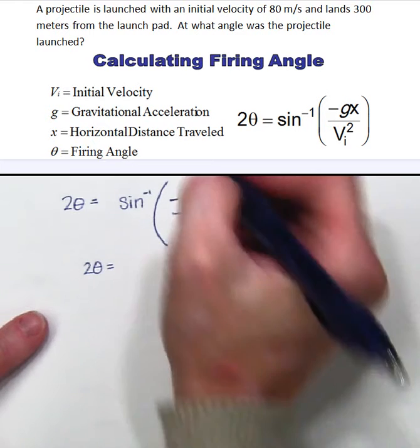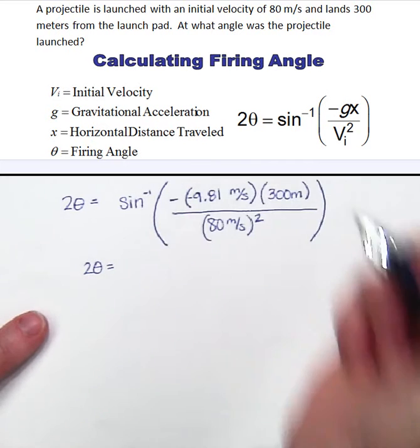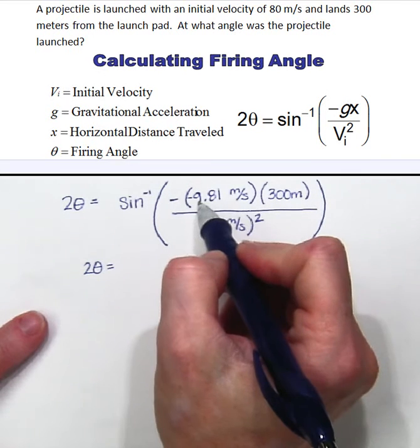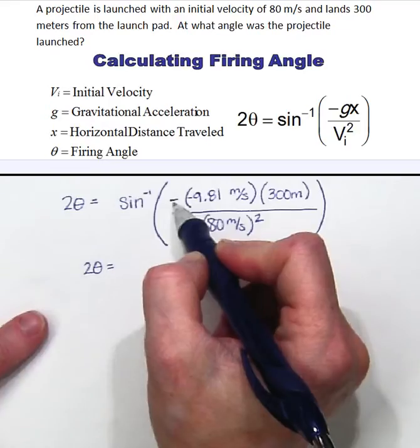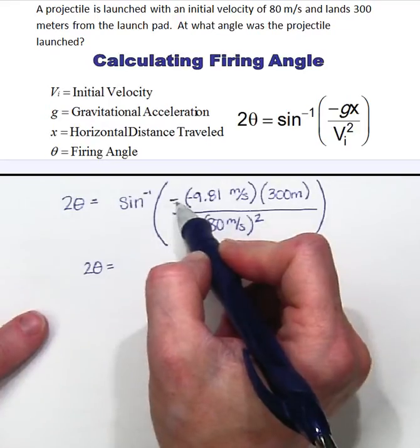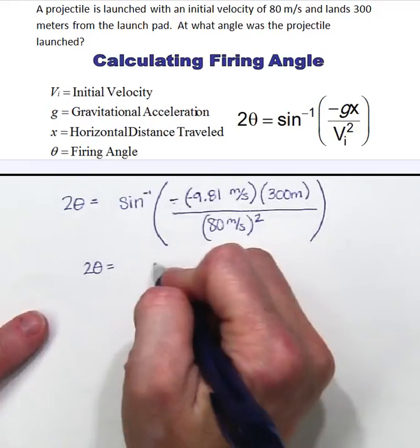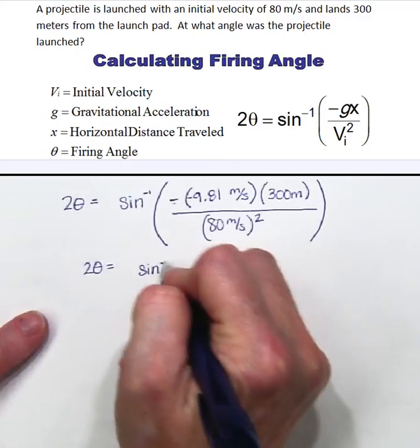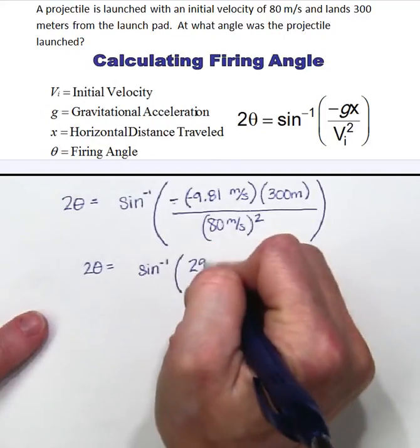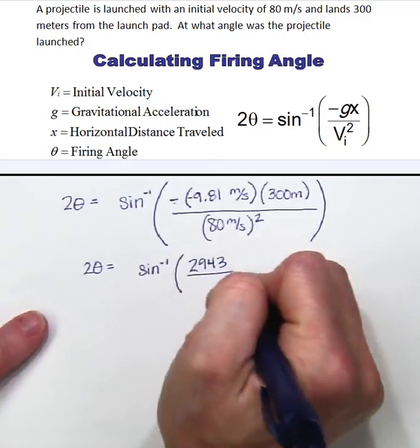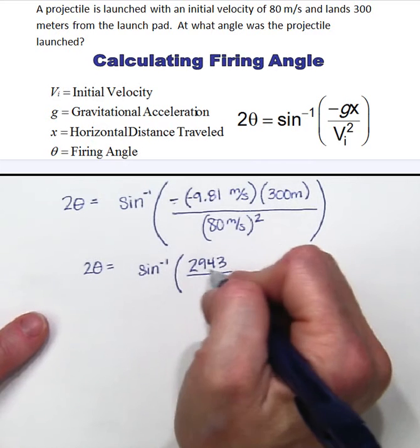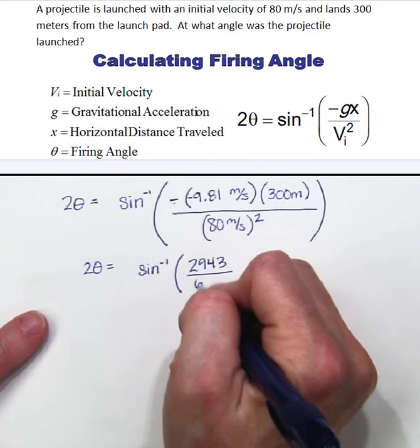So when I multiply, and this is negative 9.81, I almost made that mistake. The gravitational constant is negative and we have a negative as part of the formula so that becomes positive. 9.81 times 300 is 2,943 and we are going to divide by 80 squared which is 6,400.